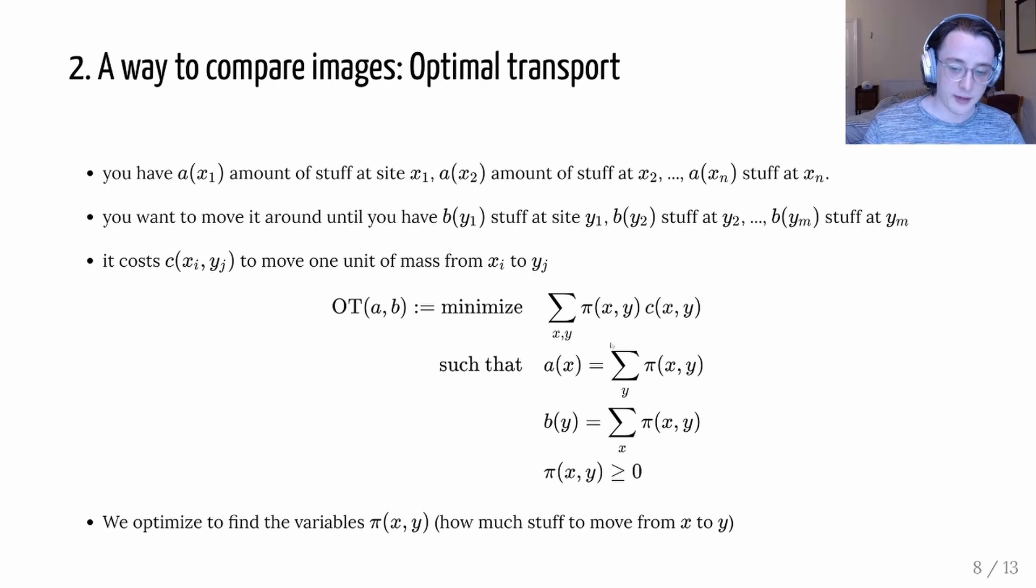And then we constrain our variable π. We have to start from the initial configuration and we have to end in the final configuration. And so then we optimize over our variables π of xy to figure out how much stuff should we move from each site x to each site y.